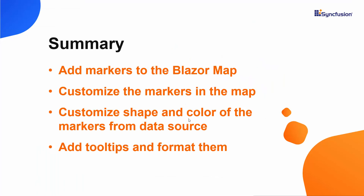That's it. In this video, we have seen how to add markers to the Blazor Maps component and change the marker's shape. We saw how to customize the color and shape of the markers from the map's data source. Finally, we saw how to add tooltips and format them. If you would like to see a working example, you can download it from the GitHub link in the description below. I have also provided a link where you can see if you qualify for a free license key to use our Blazor products through our community license. If you found this video useful, don't forget to click the like button and subscribe to our channel to watch more videos like this.